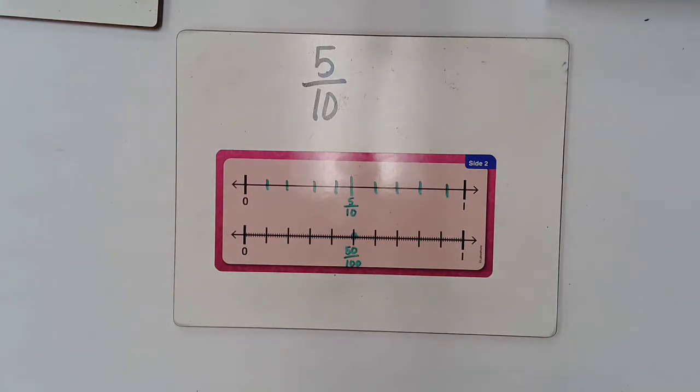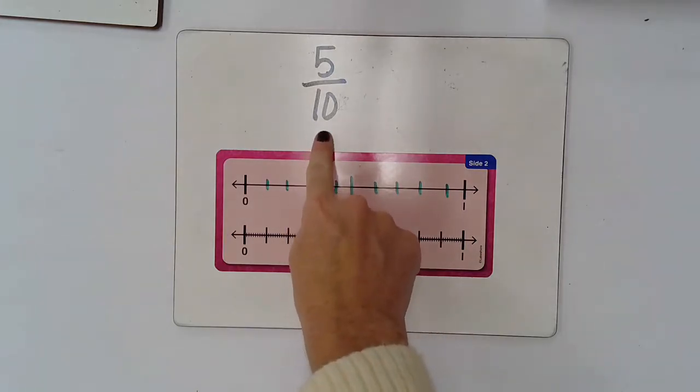We're going to be building on our previous understanding of equivalent fractions. Equivalent fractions are fractions that are equal but may just look different. We're going to be rewriting these fractions with a denominator of ten as an equivalent fraction with a denominator of a hundred.